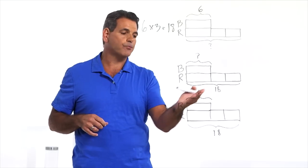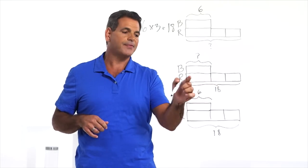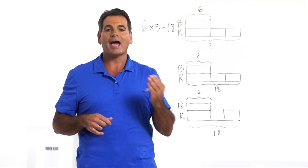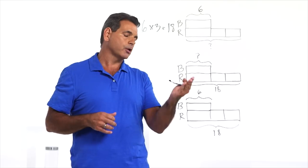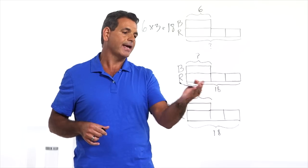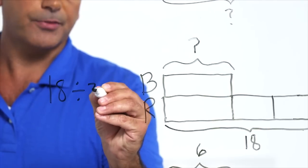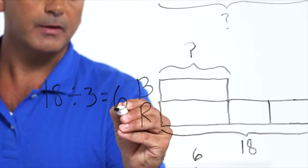In the second problem, we see a red hat costs $18 and that is 1, 2, 3 times as much as the blue hat costs. How much does the blue hat cost? We can look at the model and write the equation 18 divided by 3 equals 6.